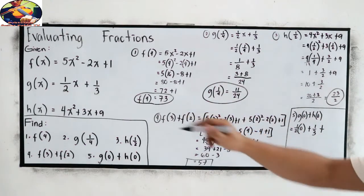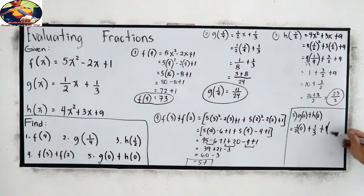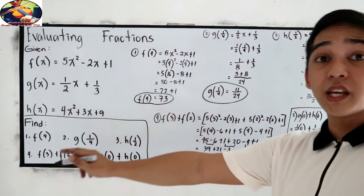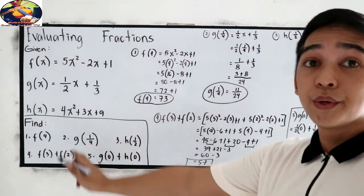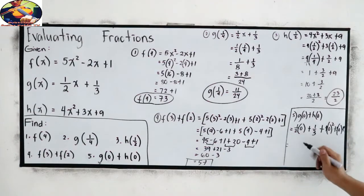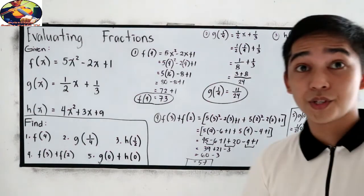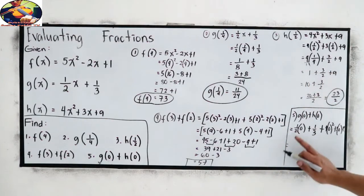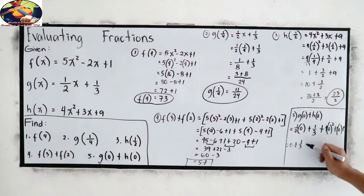Plus h of 0, 4 times 0 squared. Just change all the x to 0. So, 1 half times 0, plus 3 times 0, plus 9. We know that any number multiplied to 0 is 0. So, 1 half times 0 is 0, plus 1 third. 0 squared is 0 times 4, plus 0, plus 3 times 0, which is 0, plus 0, plus 9.